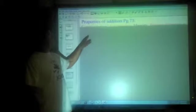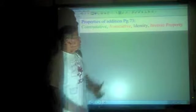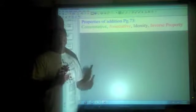We have some rules for addition. The commutative property, associative property, identity property, and the inverse property. Each one of these properties allows us to do certain things with the numbers.